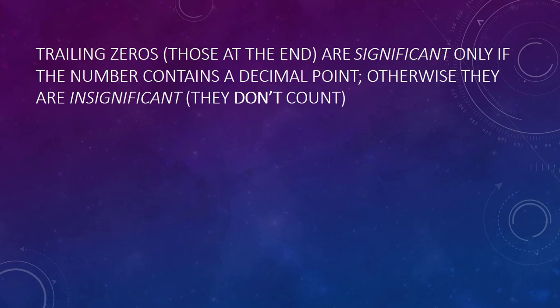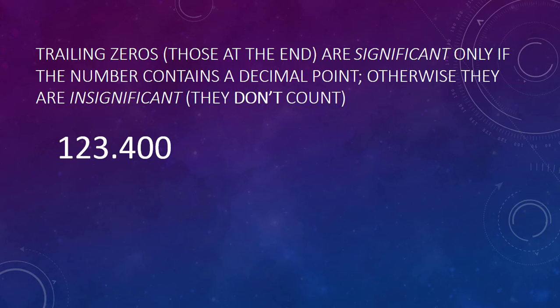Rule number three: zeros at the end of a number, or trailing zeros, are significant only if the number contains a decimal point. Notice that we have a long number that ends with two zeros. We have four non-zero numbers — those are all significant. And since those last two zeros fall to the right of a decimal place, they are significant. So we have two zeros that are significant and four non-zero numbers, giving us a total of six significant figures.